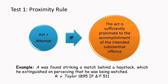Consider this example taken from R versus Taylor. Here, A was found striking a match behind a haystack, which he extinguished on perceiving that he was being watched. His intended substantive offence was to burn the haystack. So his striking the match is in fact very close to the intended substantive offence of burning the haystack. Therefore, it is not preparation — it would fall under attempt.